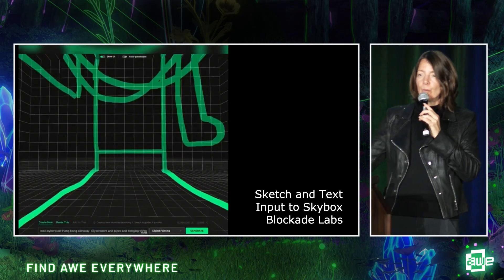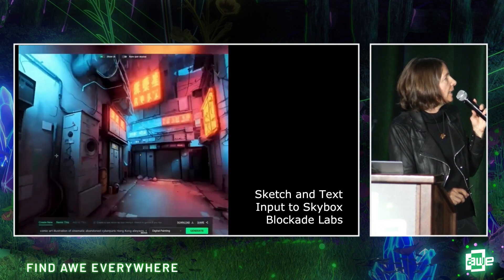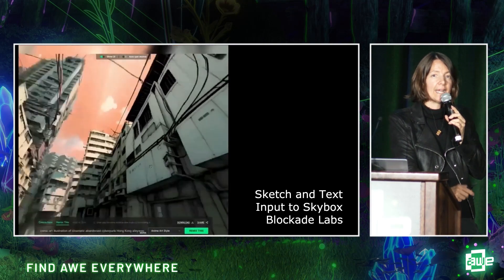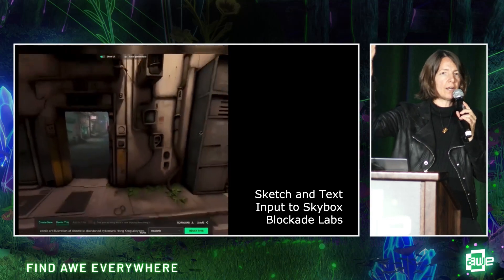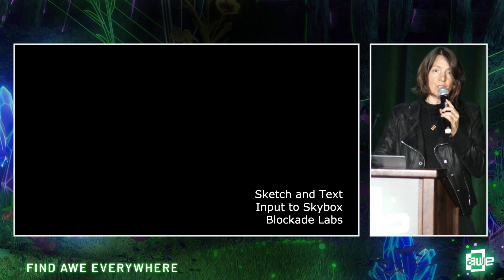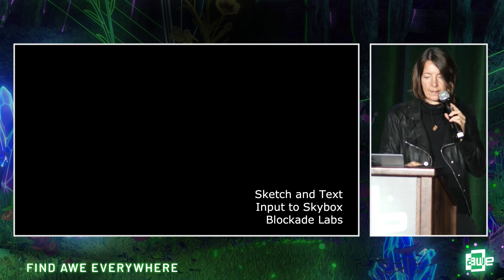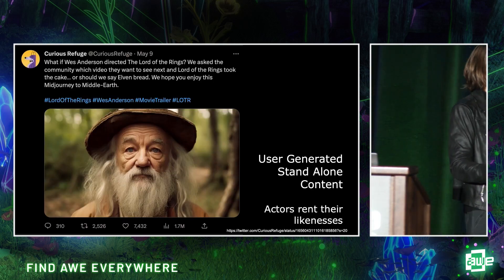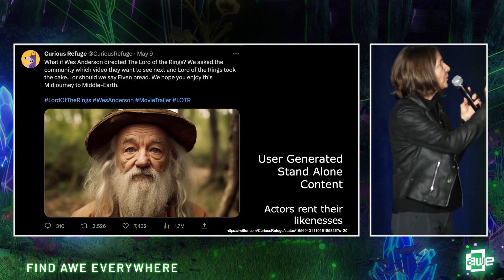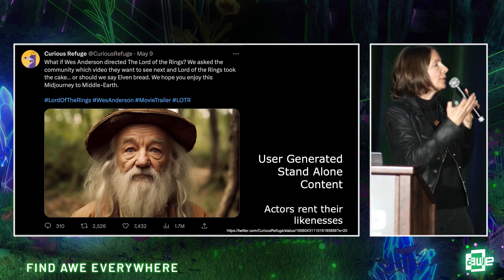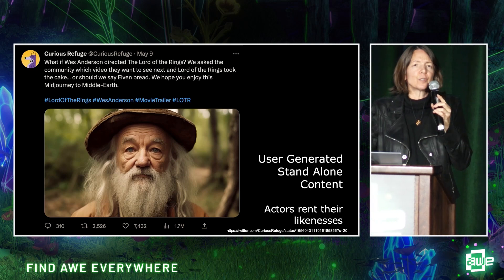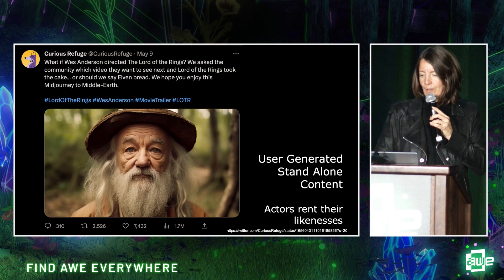We've also seen the Blockade tool — you sketch it out, it creates a rough mesh and then wonderful skyboxes based on the initial drawing, and you can apply different styles one after another. For a triple-A game the quality might not quite be there, but it's going to be very good for average users. Think about new game mechanics where the player — not the game designer — calls this world into being. And actors are already starting to rent their likenesses to AI so they could appear in a commercial or be on 12 shows in a single day.